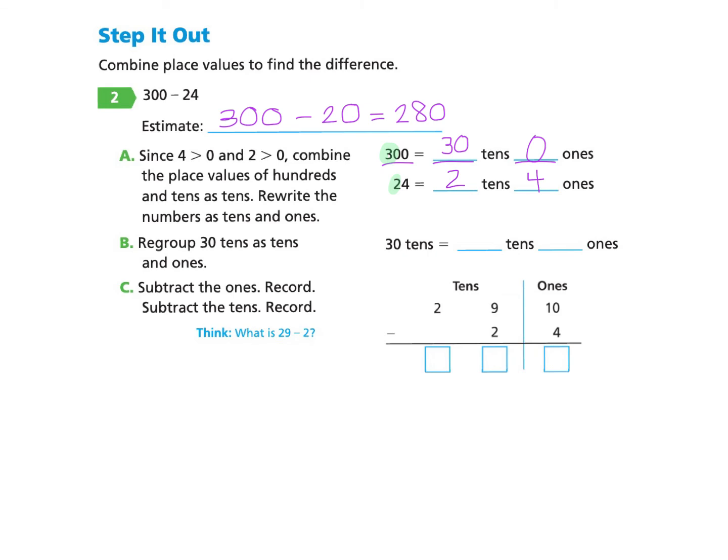Okay. So now we look at part A. Since we know that four is bigger than zero, that four is greater than zero, and that two is bigger than zero, we can combine the place values of the hundreds and the tens as tens. So now we have rewritten the numbers as tens and ones.